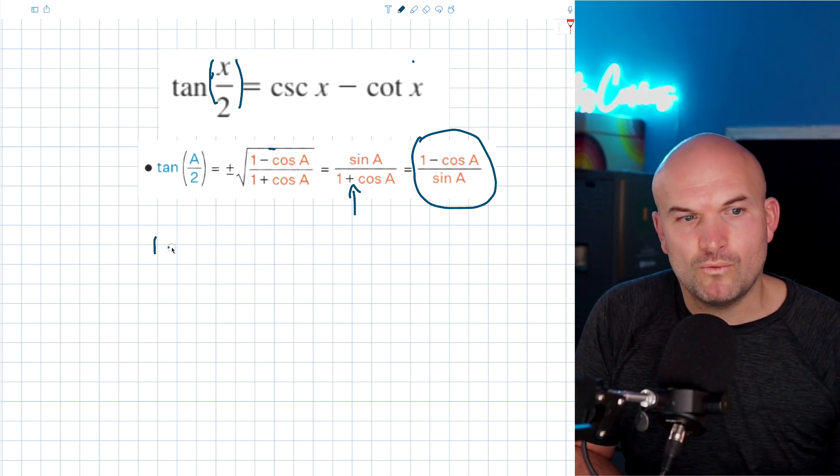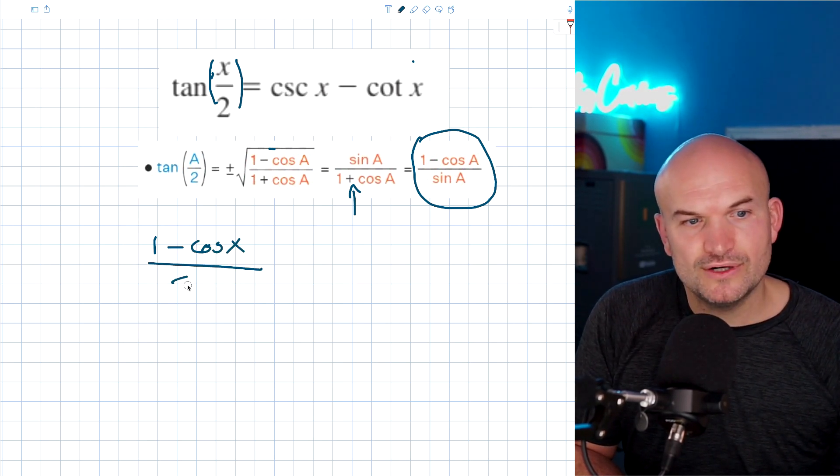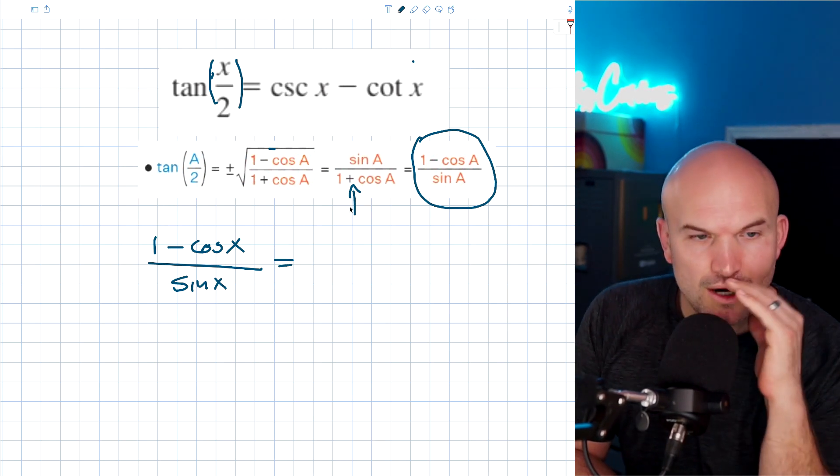So what I'm going to do here then is say, all right, one minus cosine. Now again, we're using X, not A, right? All over sine of X. And that's going to be equal to this right hand side.